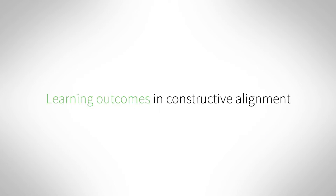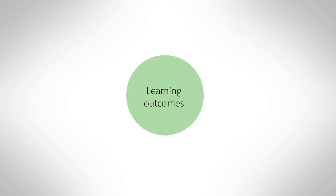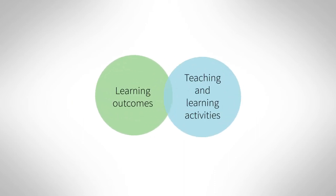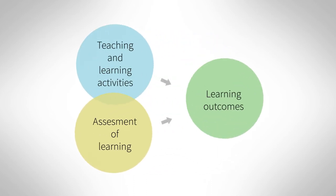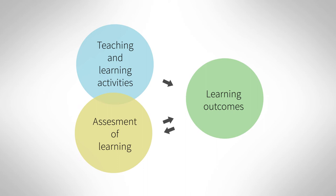While you are defining learning outcomes for your course, you should keep in mind that they should be in line with the teaching and learning activities and with the assessment of learning. Learning outcomes are particularly important in constructive alignment, as they create the foundation for the other two components. In practice, this means that you should select teaching and learning activities that will help students achieve the learning outcomes.